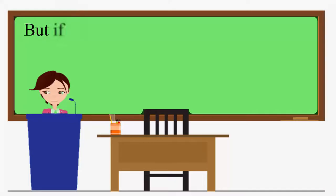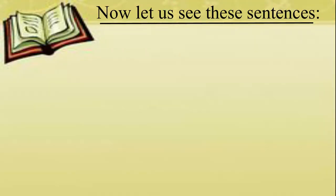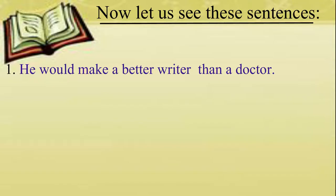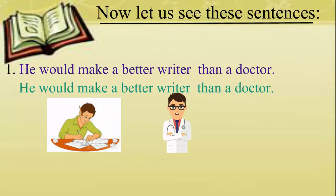But if the nouns refer to different persons or things, the article must be used with each noun. Let us see these sentences and please repeat after me. He would make a better writer than a doctor. Here, between the two prospective professions of a writer and a doctor, he would be better suited to be the former rather than the latter.